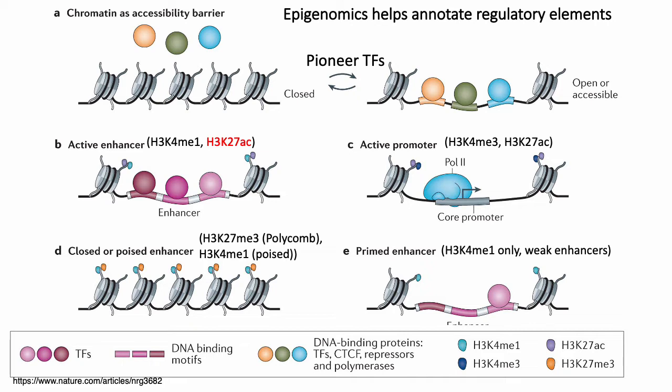Poised enhancers seem to segregate close to developmental genes, whereas primed enhancers can be found all over the genome. Part D of this diagram also seems to suggest that poised enhancers are closed, but that's not actually the case — poised enhancers tend to be nucleosome-free regions that just have the polycomb repressive mark. A lot of nucleosomes appear there because that part of the figure also illustrates that closed or inaccessible regions of the genome tend to be associated with polycomb repressive marks.